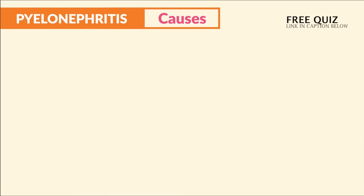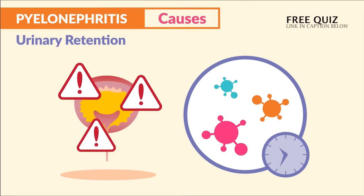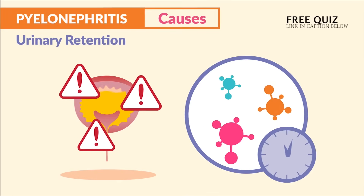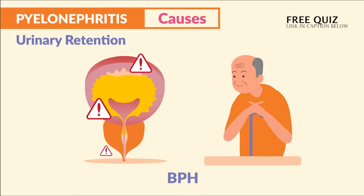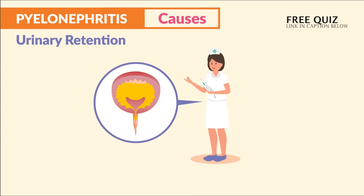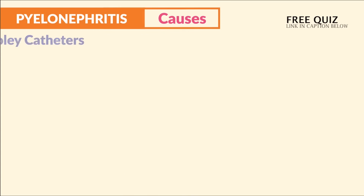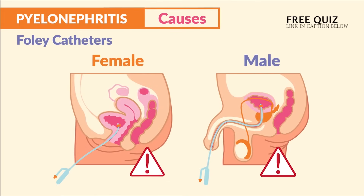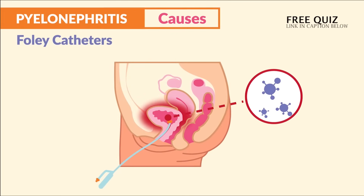In terms of causes, we have urinary retention, which lets bacteria sit in one place too long, making it easier for infection to take hold — like in BPH, an enlarged prostate in elderly men. Holding urine too long, known as nurse's bladder, and kidney stones or renal calculi can also hold back urine.